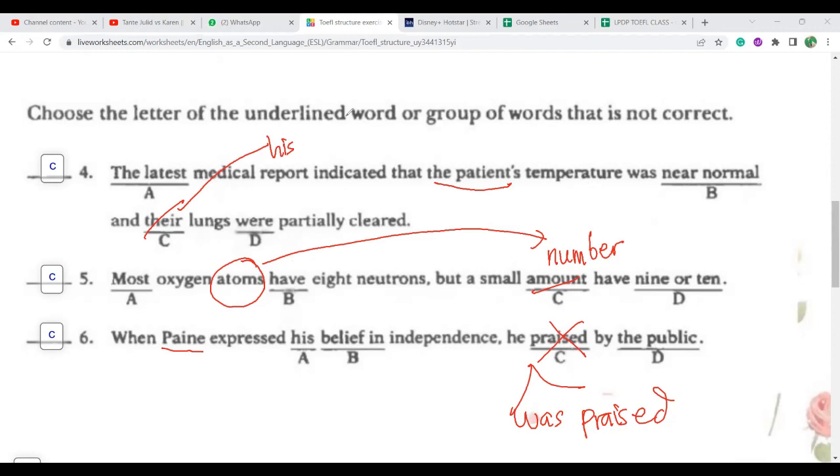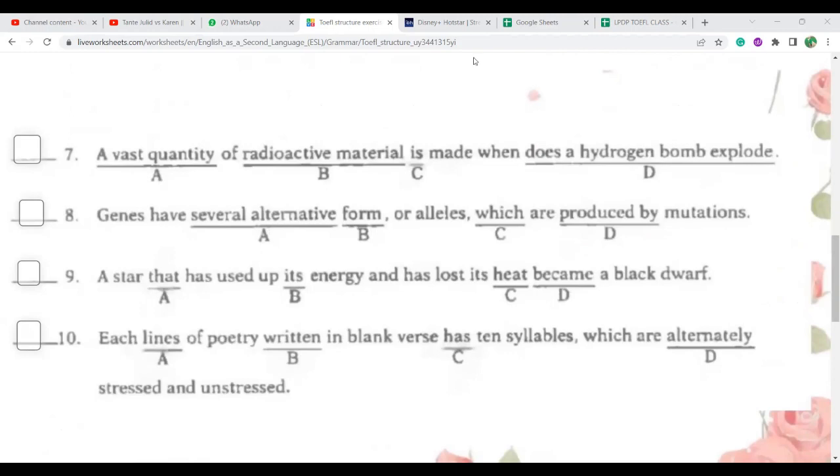Number seven. D should not be inverted. When a hydrogen bomb explodes. So there's an S. Because the S goes back into the pop. So explodes. A vast quantity of radioactive material is made when a bomb explodes, explodes with S. Okay, continue to Emil.